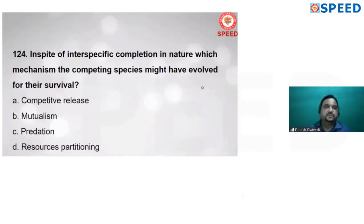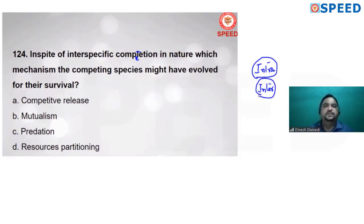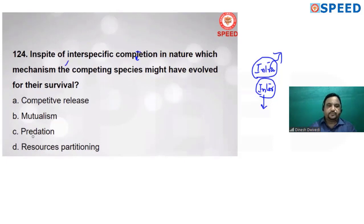Next question: in spite of interspecific competition in nature, which mechanism might competing species have evolved for survival? Competition is of two types — intraspecific (within the same species) and interspecific (between two different species). For interspecific competition, the mechanism evolved is resource partitioning. Alternate D is correct.